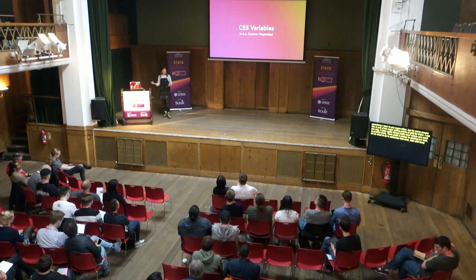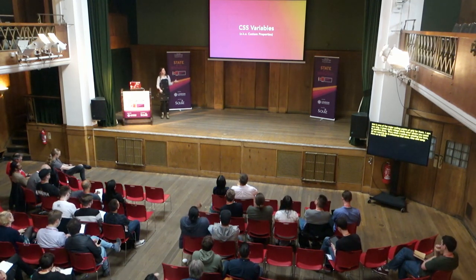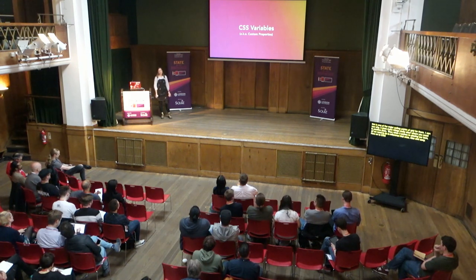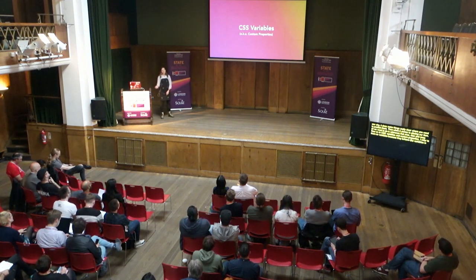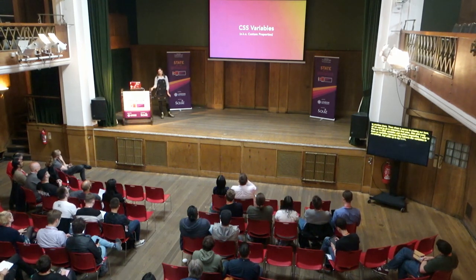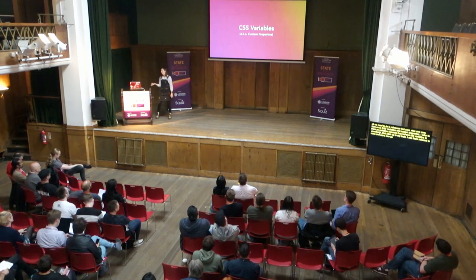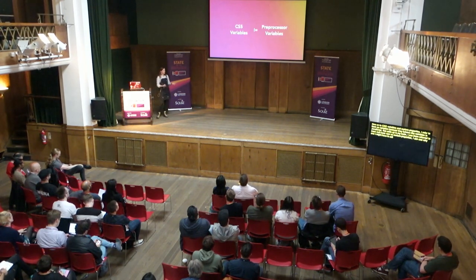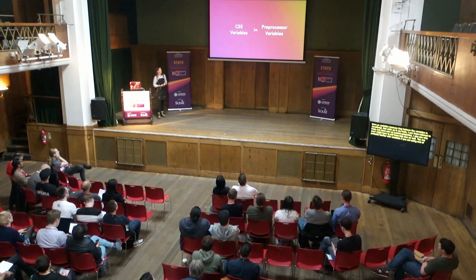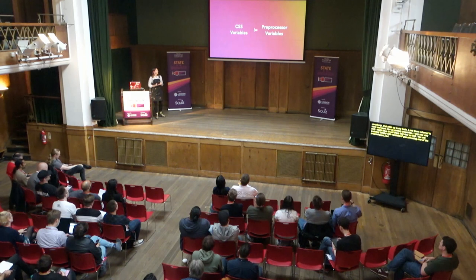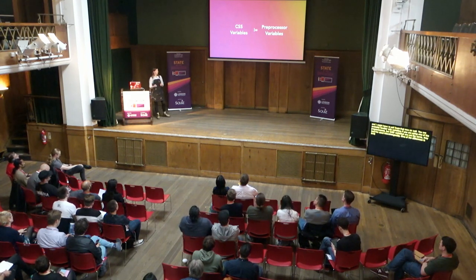Now, onto CSS variables or custom properties. I tend to refer to them as CSS variables because they behave a lot like variables in Sass or JavaScript. But I see them referred to more and more as custom properties. You're probably familiar with variables if you're using Sass or Less, but CSS variables are not the same as preprocessor variables — they can't be used interchangeably. One of the big differences is that Sass and Less variables are compiled in the preprocessing stage before your code hits the browser, whereas CSS variables are computed in the browser.